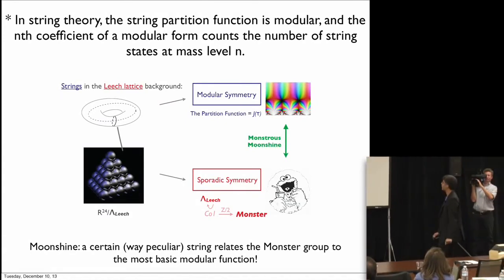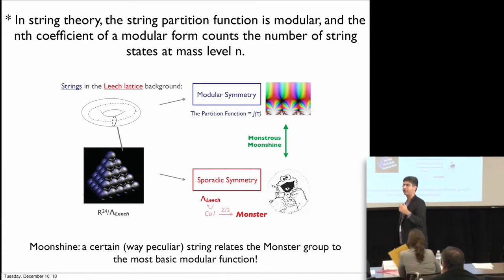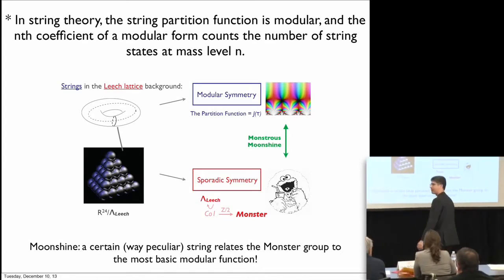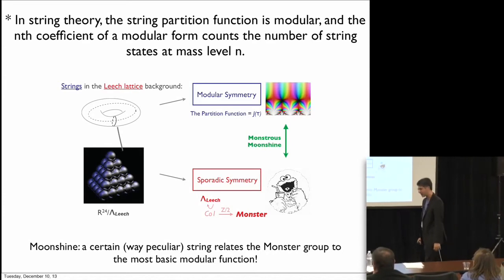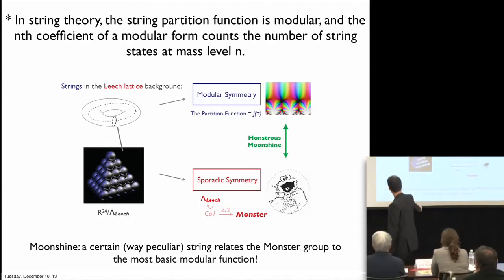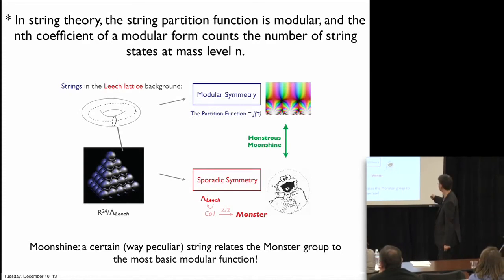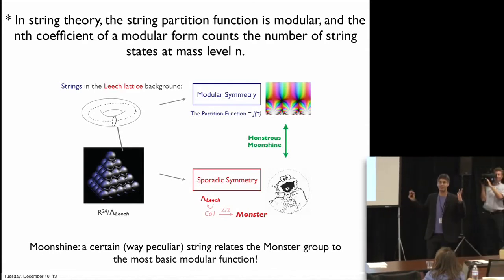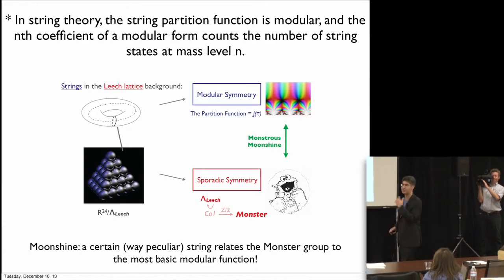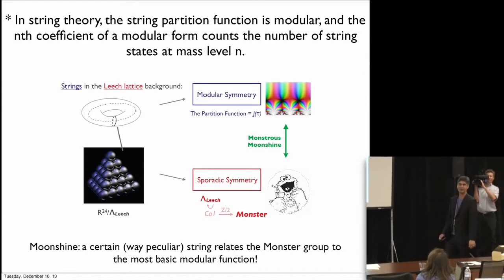This was actually explained by string theory. The string partition function at one loop that counts physical states mass level by mass level — the q to the n term counts string states at mass level n — is a modular form. There's a very peculiar string: bosonic strings on the Leech lattice, a 24-dimensional lattice that codifies the way you can most densely pack oranges in 24 dimensions. You put strings on this lattice — it's some kind of complex torus — and if you compute the partition function, you get the simplest modular function, the j function. If you look at the symmetries of the conformal field theory that describes string propagation, you find a monster symmetry. So the reason the monster and the j function are related physically is that there is a physical theory with monster symmetry whose partition function is the j function — this is an example of moonshine.